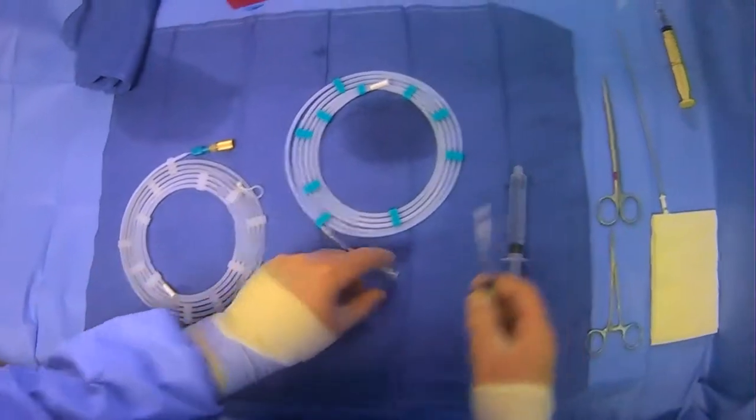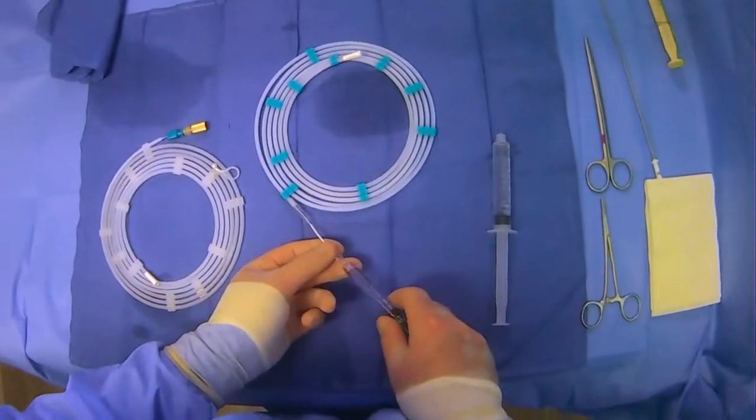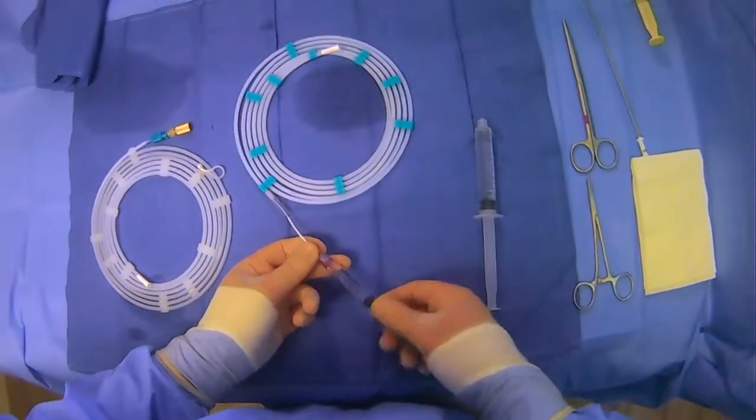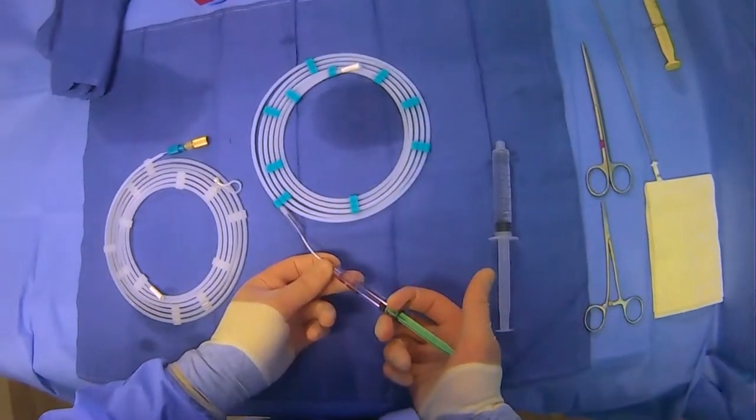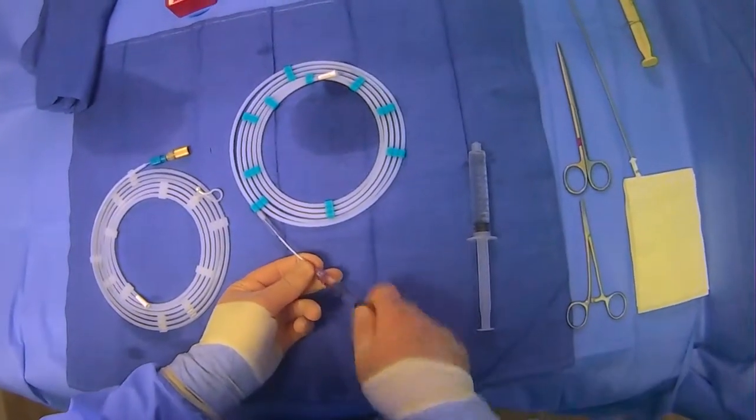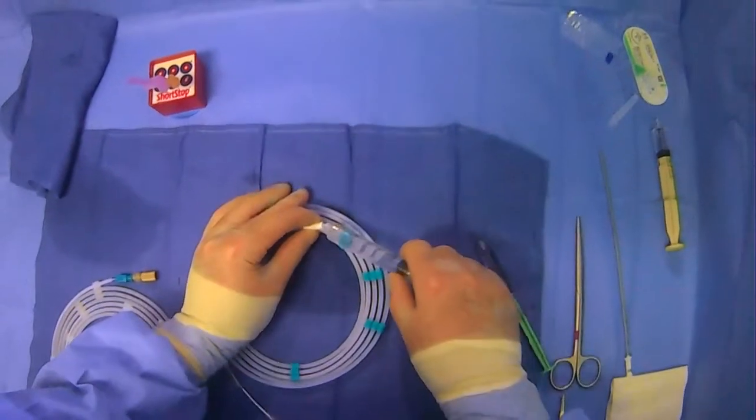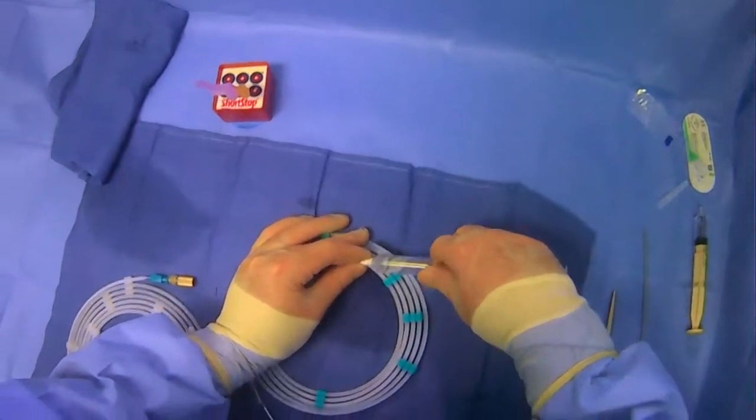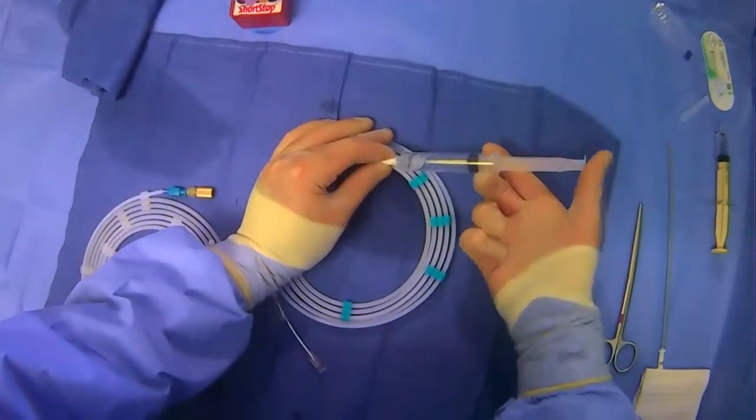First step is to flush things. When flushing microcatheters, you have to use a smaller syringe. This is a 3cc medallion syringe because the other syringes can't generate enough pressure. So you can use the smaller syringe to flush the inside of the catheter. You can use a larger syringe to flush the outside from the other end.